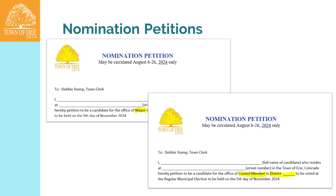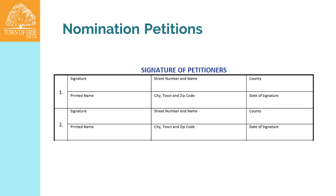This is what the nomination petitions look like — we have one for mayor and one for a council member, and you need to put your district number on there: one, two, or three. This is where the signatures go, and you need to make sure that you get a signature, a printed name, a street number and name, the city, town, and zip code, the county, and the date.